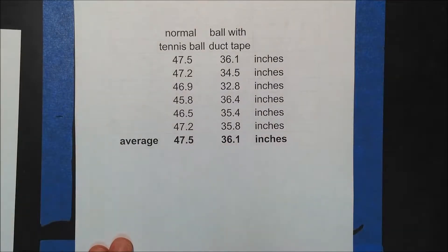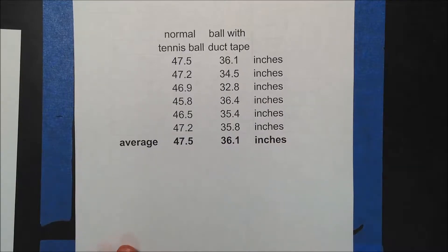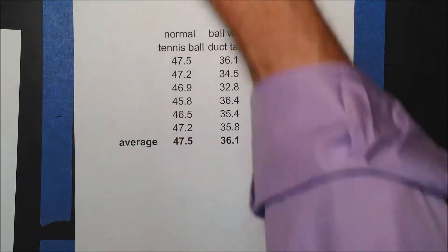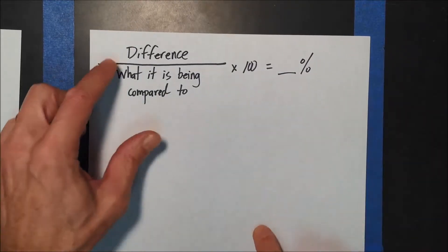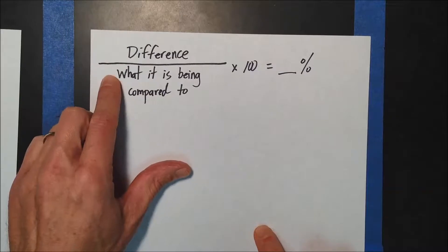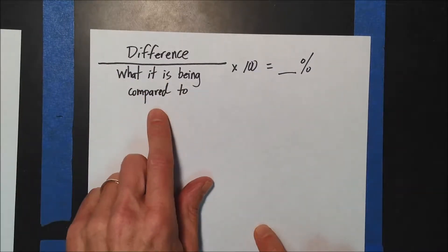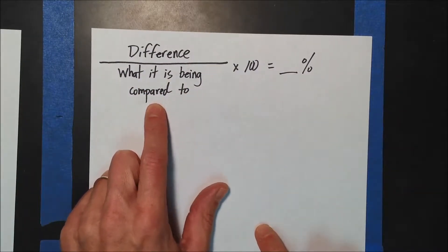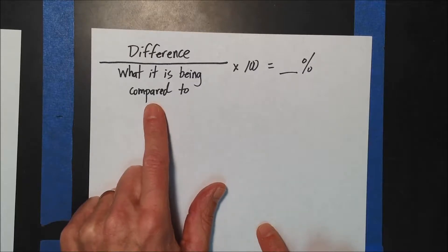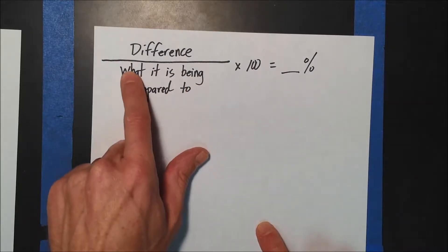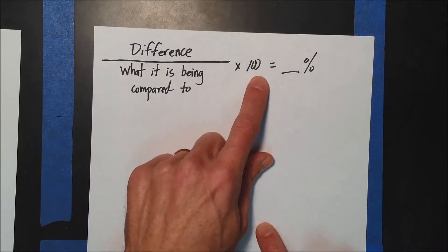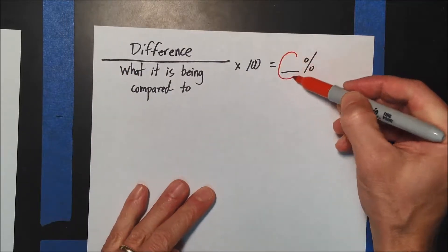So the way to compare them — a good way to compare them — is using the percent difference between them. If I was to write the formula out, it's the difference between the two, and then on the bottom you put what it's being compared to. When you do percent error, you would use the actual value here, but we don't really have an actual. So whatever you're being compared to, you put it on the bottom, you multiply by 100, and that will convert it into a percent number.